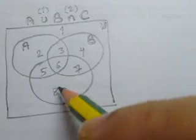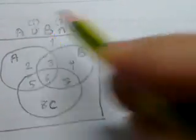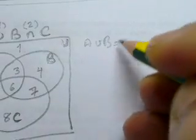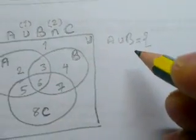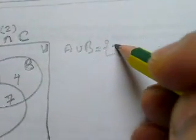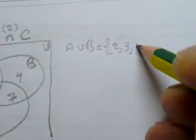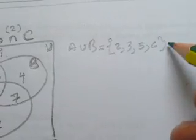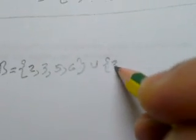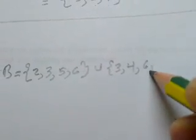A union B first. So A has regions two, three, five, six. B has regions three, four, six, seven.